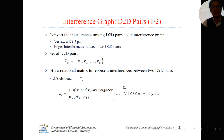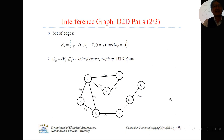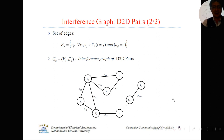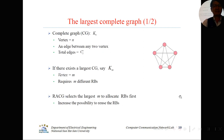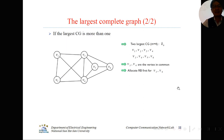We convert the interference to a relational matrix that represents interference between two D2D pairs. We then have the interference graph. The basic idea is we try to get the largest complete graph, because finding the largest complete graph is a better way to allocate the resource block.